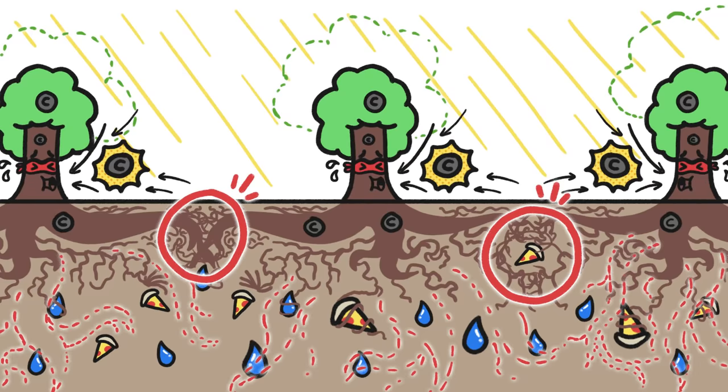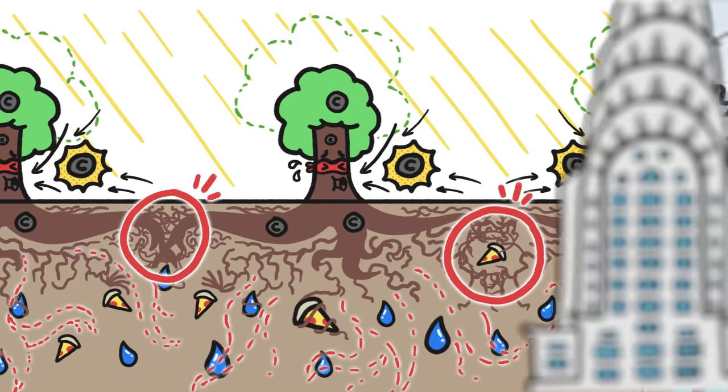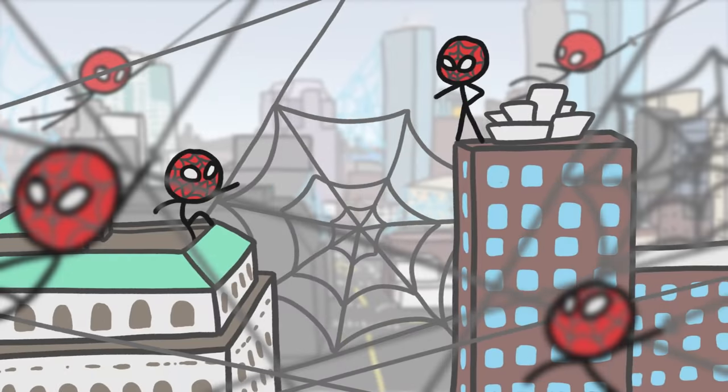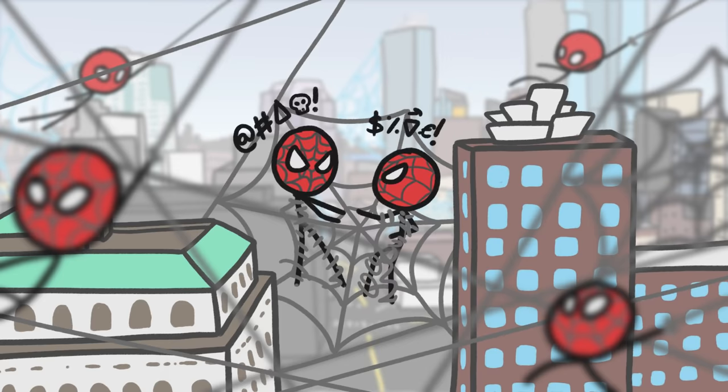As a result, they can't sequester much carbon. It's kind of like how a New York City filled with tons of identical Spider-Men would probably be not so super.